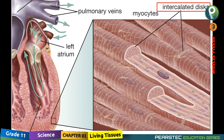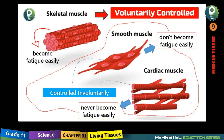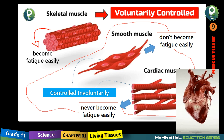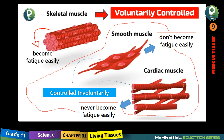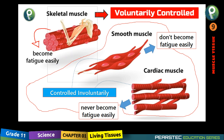Intercalated discs are present among cardiac muscle cells. They never become fatigued — if cardiac muscle got fatigued like skeletal muscle fibers, we would die. The cardiac muscle is unstoppable and works until we die. Cardiac muscle fibers are involuntarily controlled. To summarize: smooth muscle cells are involuntarily controlled, skeletal muscle fibers are voluntarily controlled, and cardiac muscle fibers are also involuntarily controlled.